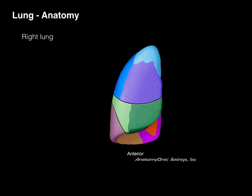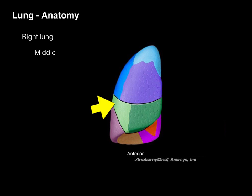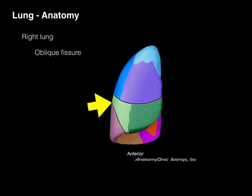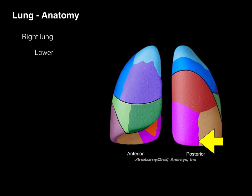The right lung has three lobes and two fissures. It has an upper lobe that is separated from the middle lobe by the horizontal fissure. There's our right middle lobe, which is separated by the oblique fissure from the right lower lobe. This is on the anterior view of the lung. If we look at a posterior view, that whole region is the inferior lobe, or the lower lobe — notice how big it is.